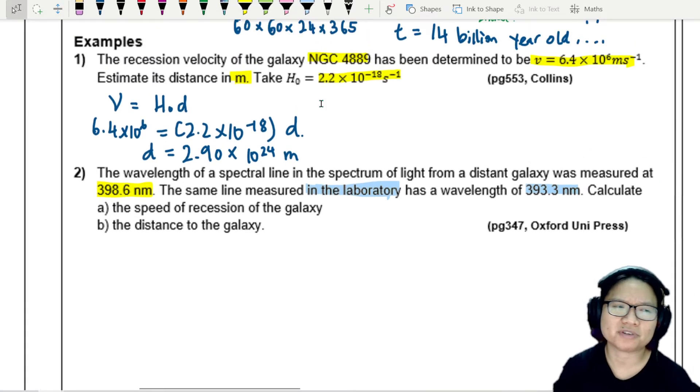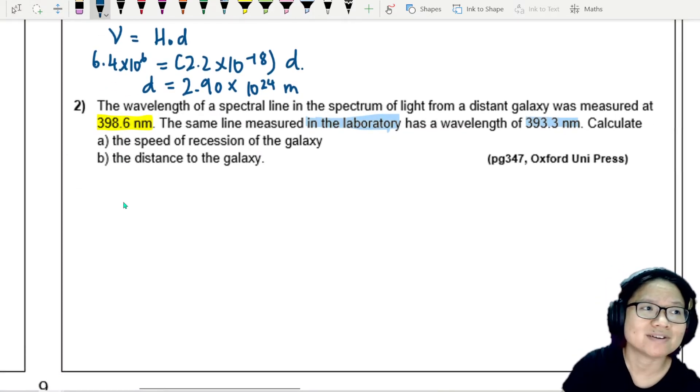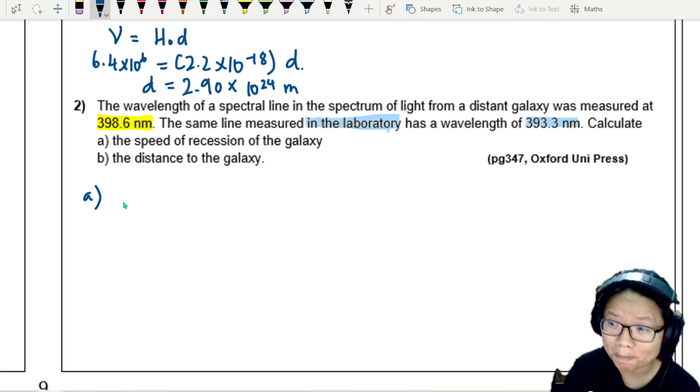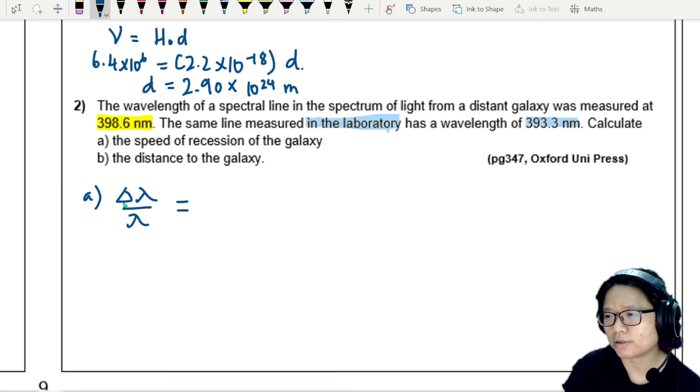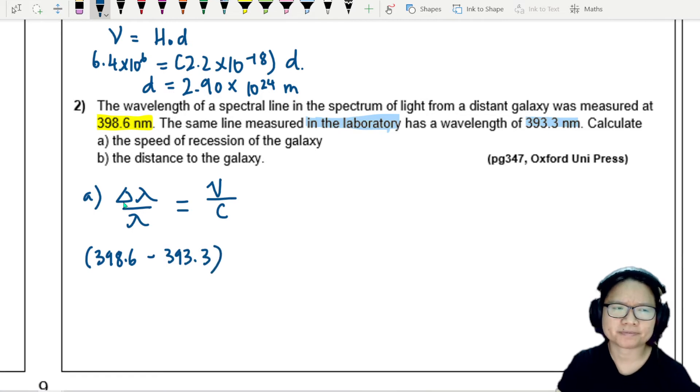We already know from the first example, if I know the recession speed, I can find the distance, but how do I find the recession speed? We use our good old Doppler. I'm going to use the Doppler relationship. The shift in wavelength over wavelength is approximately equal to speed of recession divided by the speed of light. I'm going to take 398.6 minus 393.3.